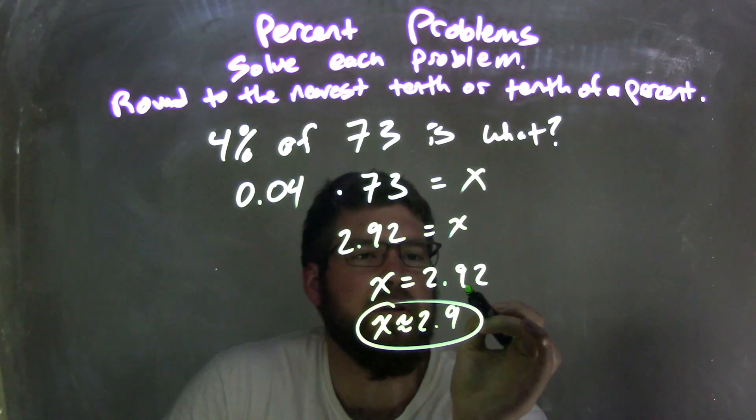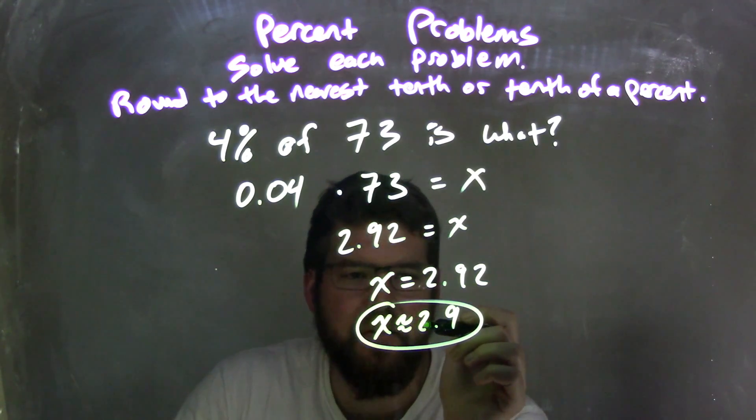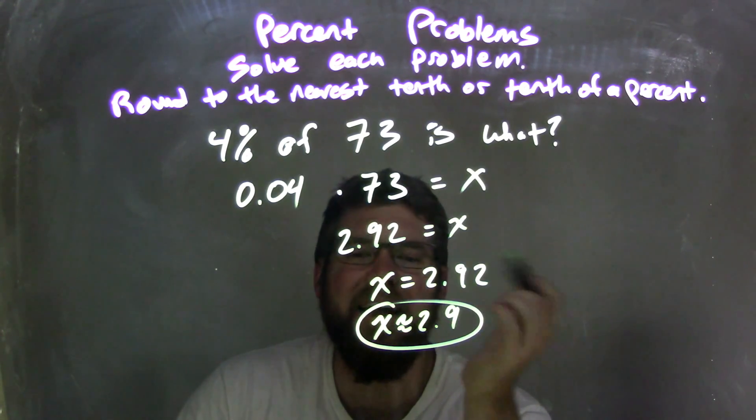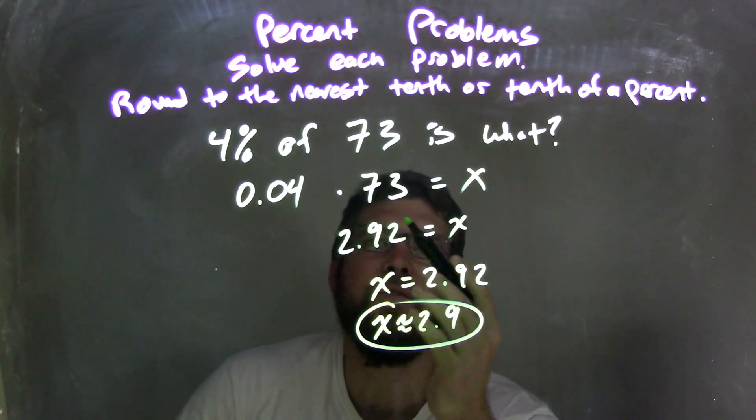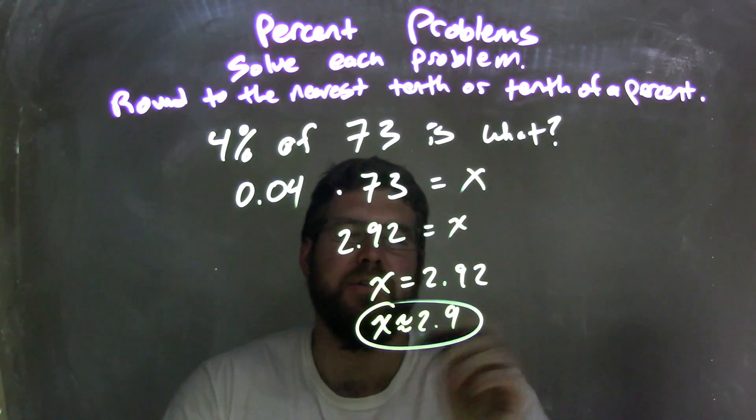From there, I rounded it. Looked at the 9 and the 2. The 2 causes the 9 to stay where it is. And so I left it with x is approximately a rounded answer of 2.9, answering the question that 4% of 73 is 2.9.